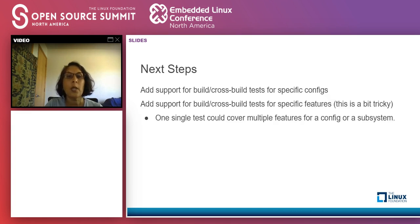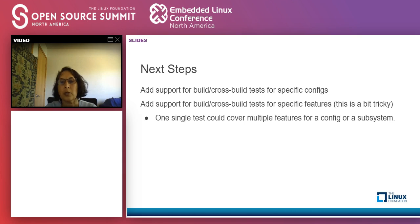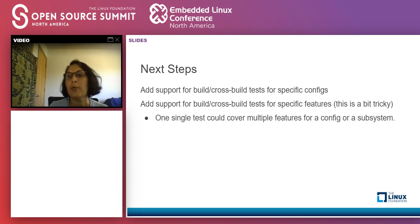Next steps: I've talked about evolving this framework — well-suited for manual testing — into an automated environment where you can tailor configurations to the target system and select specific features. That's work in progress. I'm working with Kernel CI admins; Kevin and I have been collaborating to get this all working so we can run it in Kernel CI on a consistent basis, so that when they pick up a new release to test, they will be able to run kernel selftests as well.